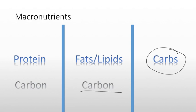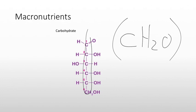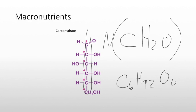And carbohydrates — carbs — you might guess it's going to be carbon, and you'd be right. Carbohydrate literally means carbon (C) plus hydrate (water, H₂O), giving you CH₂O repeated a certain number of times. Here's a molecule of glucose: C₆H₁₂O₆, or six CH₂O units strung together. So carbohydrates have carbon, fats and lipids have carbon, and proteins are made up of carbon.